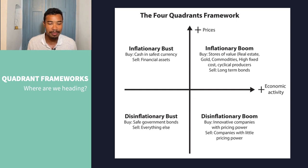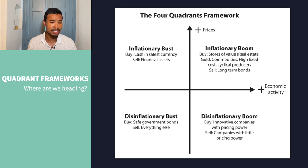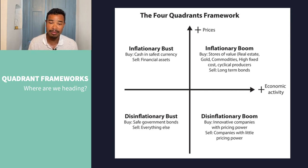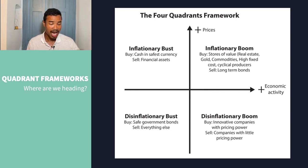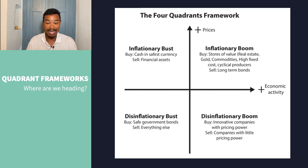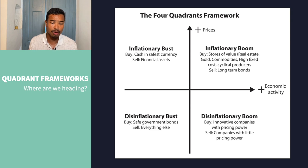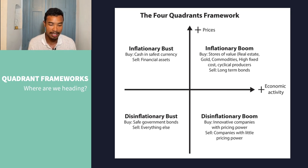In the inflationary bust period — that top corner — is where most people in consensus would place us currently. We're seeing inflationary pressures throughout the economy alongside a slowdown. There are some pitfalls in economic data, though we still have a strong labor market and earnings have been pretty resolute. Notably, in the inflationary bust corner of this framework, Charles Gave recommends: buy cash in the safest currency, sell financial assets — and we have seen that flight to the dollar as a safe haven.